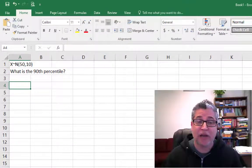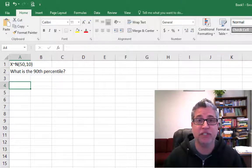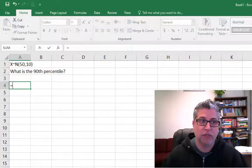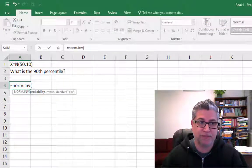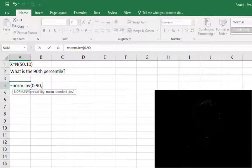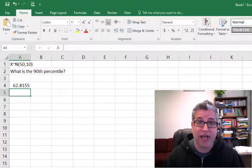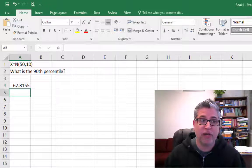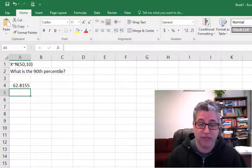So our question is, out of X random variable that's normal with a mean of 50 and a standard deviation of 10, what's the 90th percentile? So we key in norm inverse 0.90 for 90 percent. We tell it the mean, we tell it the standard deviation, close your parentheses, hit enter, and we have our answer.